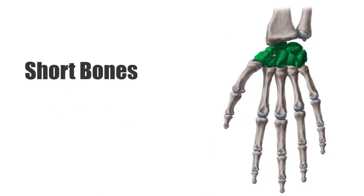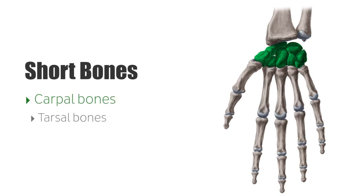Next are the short bones, which consist of a thin external layer of compact bone covering a vast spongy bone and marrow, making a shape that is more or less cuboid. The carpal and tarsal bones fall into this category.